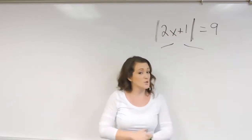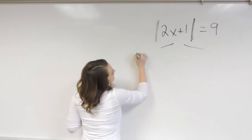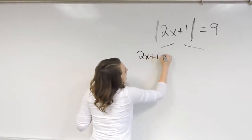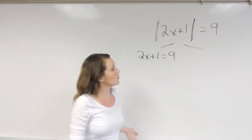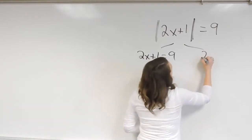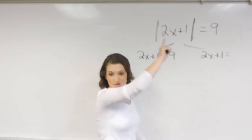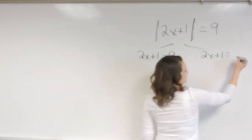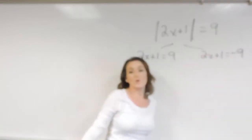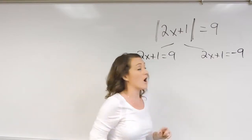The first equation is always the regular normal looking equation the way that it is there. So that would be 2x plus 1 equals 9. The other equation is going to be our negative aspect of it. So the left side is still always going to stay the same, but we're going to set it equal to the negative value. So instead of it equaling 9, we're going to set it equal to negative 9. And these are the two equations that we need to solve.